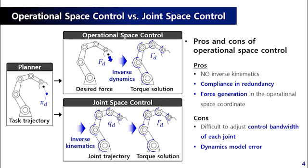However, cons are that it is difficult to adjust control bandwidth of each joint and that it can be affected by dynamics model error. Therefore, it is known by experiments that operational space control lacks the ability of precise control compared to joint space control.